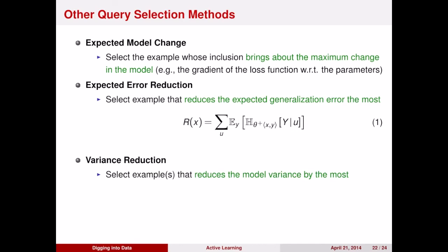The other alternative is instead of looking at the absolute change in your model parameters, you can look at what examples would allow you to get a narrower confidence interval about what you believe your model parameters could be.